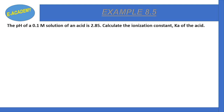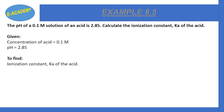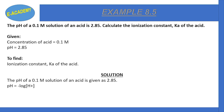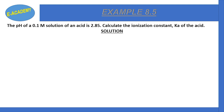Example 8.5: The pH of a 0.1 molar solution of an acid is 2.85. Calculate the ionization constant Ka of the acid. Given: molarity = 0.1 molar, pH = 2.85. From pH = −log[H⁺], we get [H⁺] = 1.4 × 10⁻³ molar.